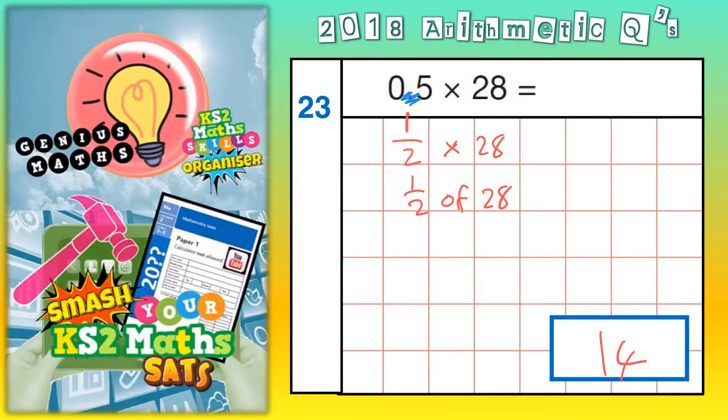So ignore the decimal point and pretend that that says 5 times 28. So 5 times 28, let's work that out. 5 eights are 40. Put the 0 in, carry the 4. 5 twos are 10, plus the 4 is 14. So if 5 times 28 is 140,